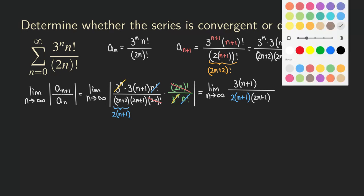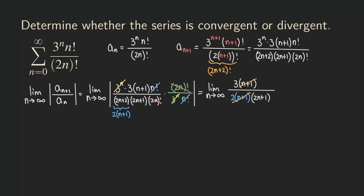We can cancel (n+1) from numerator and denominator. The limit simplifies to just 3 in the numerator over 2(2n+1) in the denominator. As n goes to infinity the denominator goes to infinity while the top is just 3, so the limit equals 0. Since this limit is less than 1, the series is absolutely convergent.